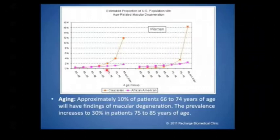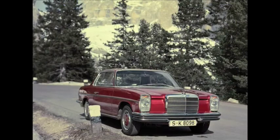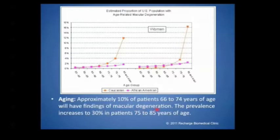Here's a graph I found on age-related macular degeneration, and this is just contrasting African Americans versus Caucasians. The important point is everybody's going to get it. It's just like if you drove a '67 Mercedes, eventually everyone would replace the parts or the light bulbs. At 66 to 74, 10% of people have findings consistent with AMD, and it just increases.